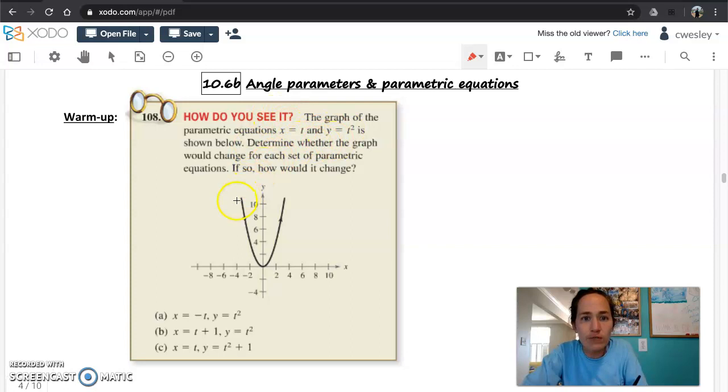You have your original parametric functions in the warm up, x equals t and y equals t squared, to give you this parabola graph where the orientation is from left to right. What would the change be in part a? It just says, how would the graph change? The only thing changed here is the sign of the horizontal component. So all this is going to do, it's going to reverse the orientation. You'll get the same shaped graph, just traced out in the opposite direction.